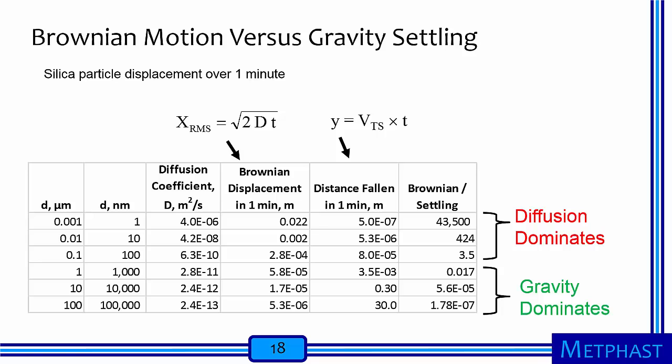To get a better feeling for how particle size dictates what forces are important, let's compare how far a silica particle moves in one minute due to Brownian motion and gravity settling. I show particle diameter in the first two columns, then displacement in one minute due to Brownian motion in column three and that due to gravity settling in column four, and the ratio of these displacements in the rightmost column. The force of gravity dominates for particles larger than one micrometer, whereas the force of Brownian motion dominates for particles smaller than 100 nanometers. For a 10 nanometer size particle, Brownian motion causes 424 times more displacement than gravity. However, the distance moved in one minute is still very small, 0.002 meters or 2 millimeters.